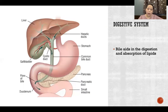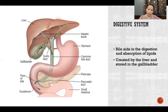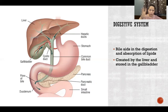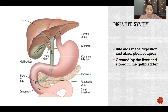Another digestive example is bile, which aids in the digestion and absorption of lipids. Bile is created by the liver and then travels to the gallbladder — a small squeezy bag that stores the bile. When we eat something with a lot of lipids, the gallbladder contracts and squirts its stored bile into the common bile duct, which carries it into the lumen of the small intestine.